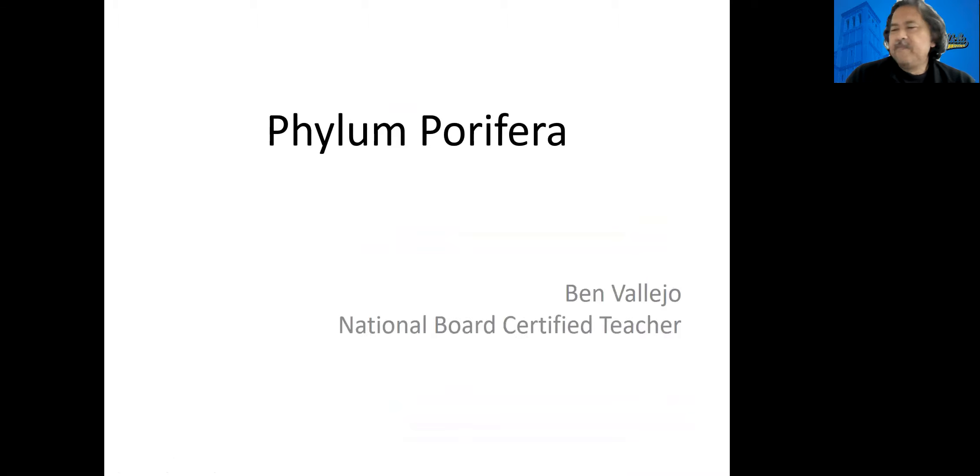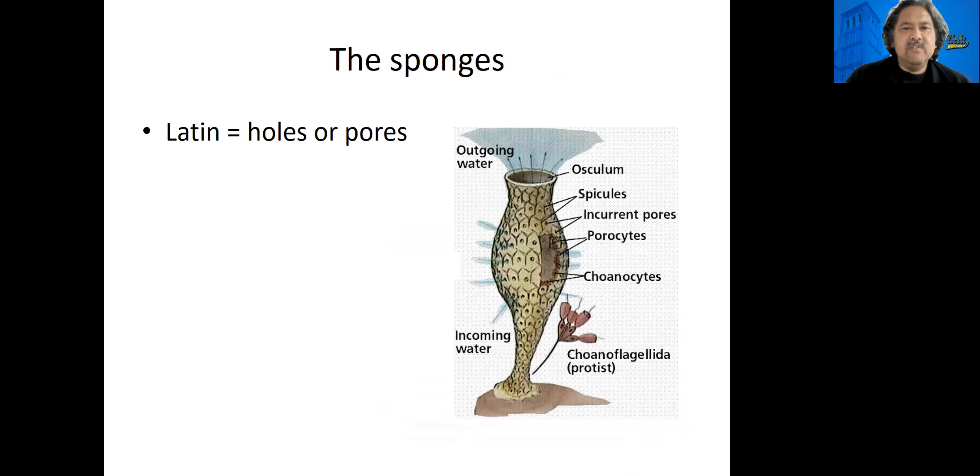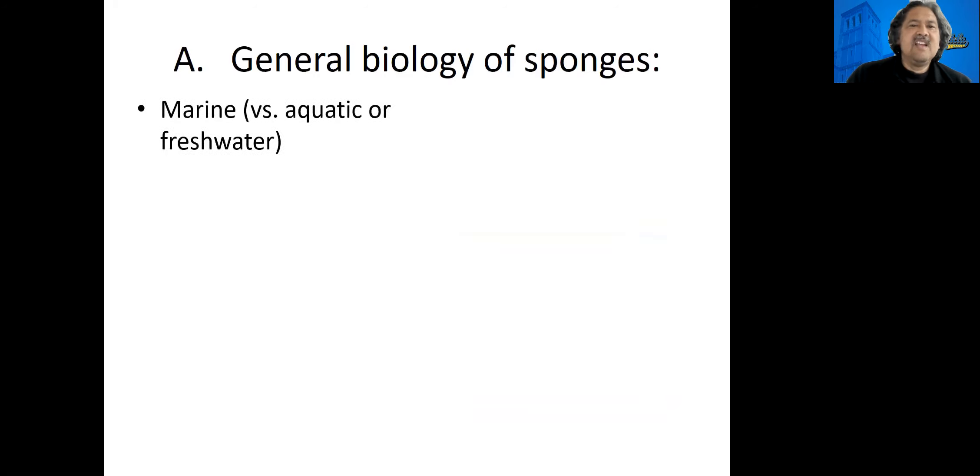This is the phylum Porifera. The term Porifera comes from the Latin for pores. The body of the sponge has thousands and thousands of microscopic pores where the water goes in, and then you can see the water goes out, sometimes at the top, but that creates a one-way flow of water through the sponge.